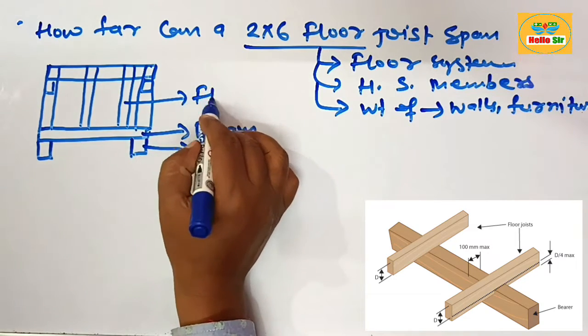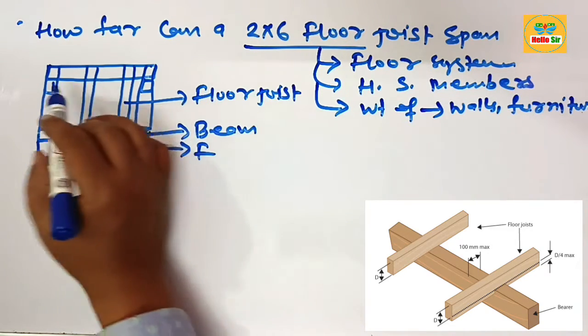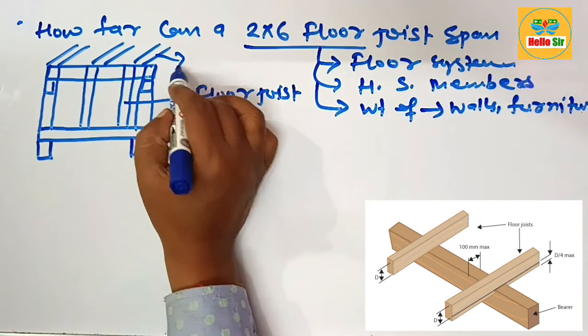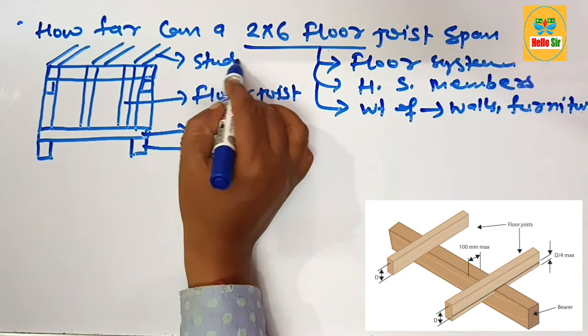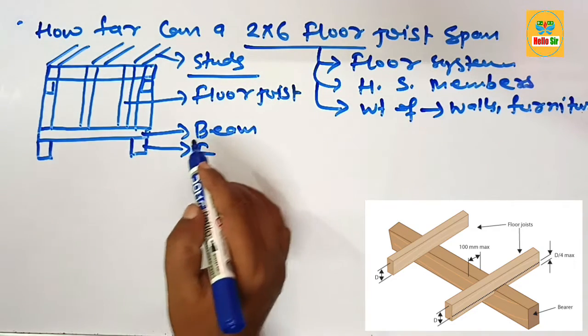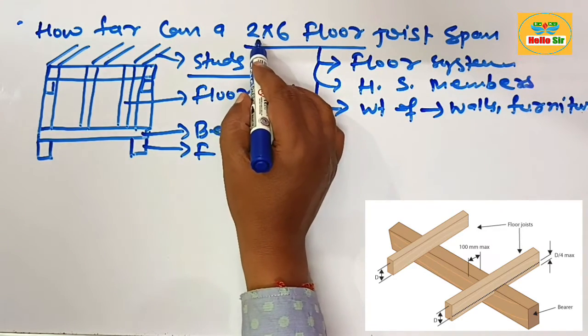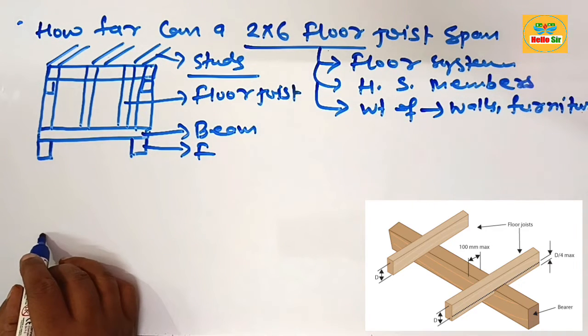And this one is your floor joist, and this will be your wall stud. This is a rough diagram to understand the floor joist. Here the dimension for the floor joist is 2 by 6.